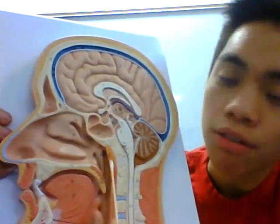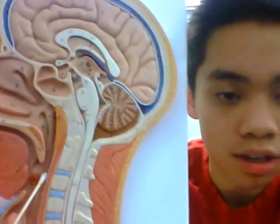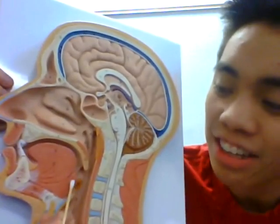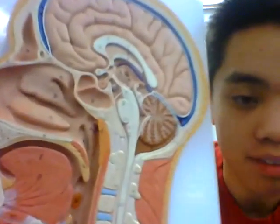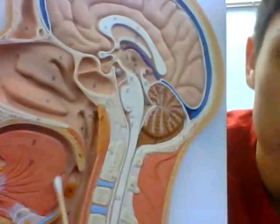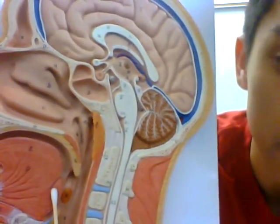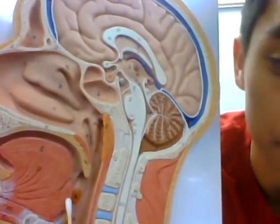We'll go over several tonsils. This one right here is called the pharyngeal tonsil. This one over here is called the palatine tonsil. And then this one right here — there is a little lip here — this back portion right here is the lingual tonsil.